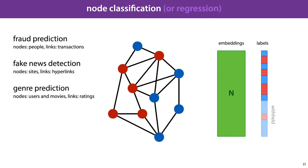Another machine learning task we can do on graphs is node classification. Here we are given a graph, and for each node in the graph we are given a label, and the label is what we want to predict. We could use this for instance for fraud prediction, where the nodes are people and the links are financial transactions, and some of these people are engaged in fraudulent behavior. We could use it for fake news detection, where the nodes are websites on the internet and the links are hyperlinks between these websites. Or we could use it for genre prediction, where the nodes are users and movies as before, and the links are ratings. But this time we're not trying to predict missing ratings, but we're trying to predict properties of those nodes that represent movies.